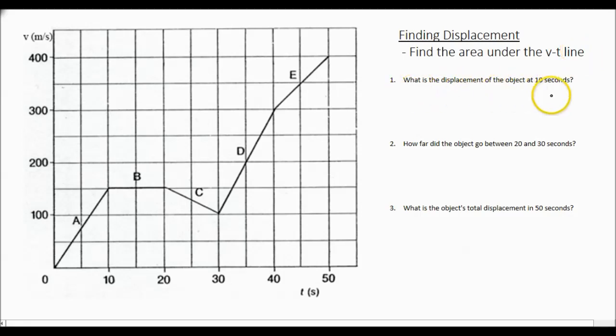Question 1, what is the displacement of the object at 10 seconds? Go to 10 seconds, we find out that we need to find the displacement of this particular area here, and so the graph is in the shape of a triangle. And so we have to just find the area of this particular triangle.